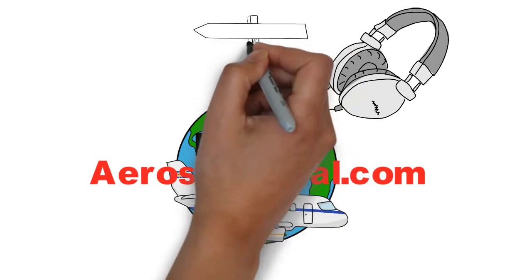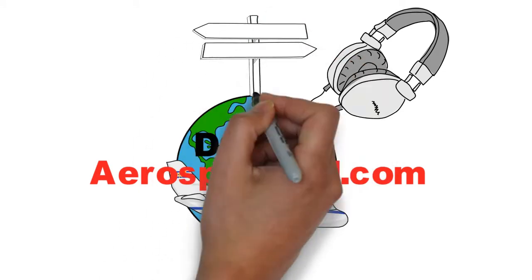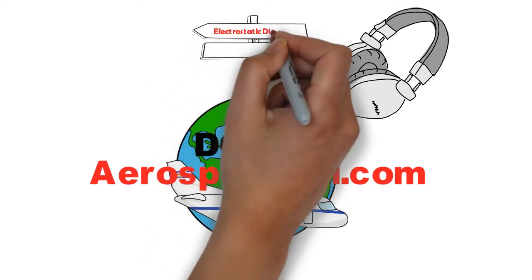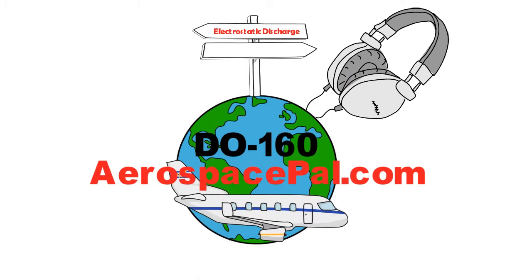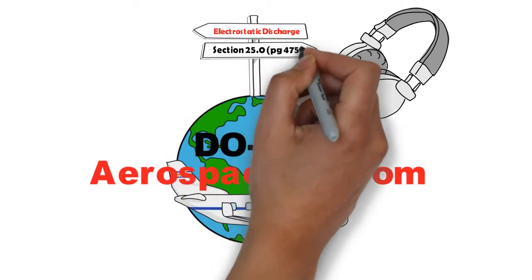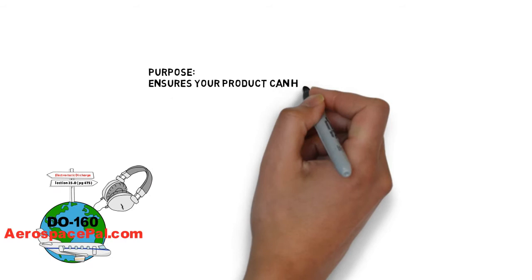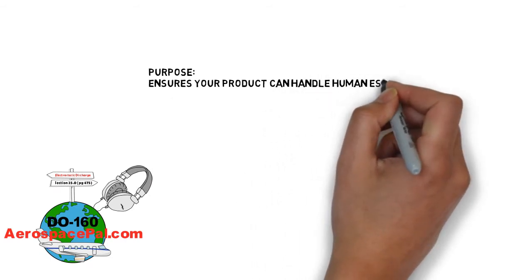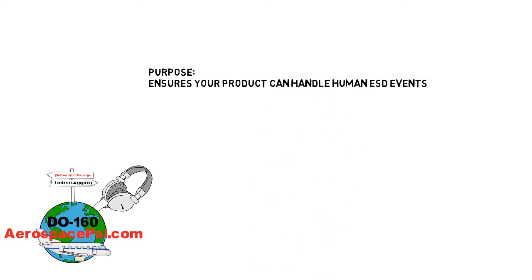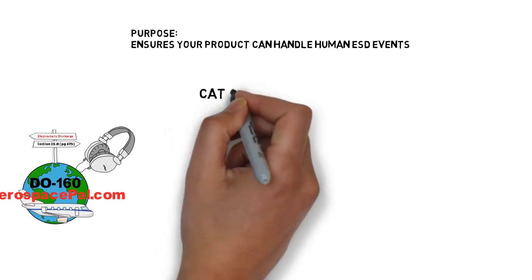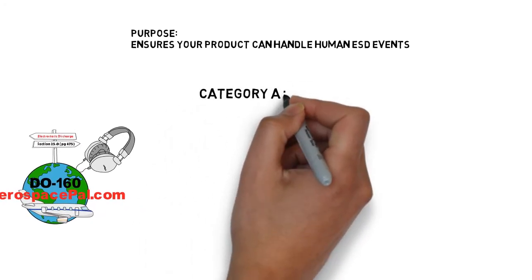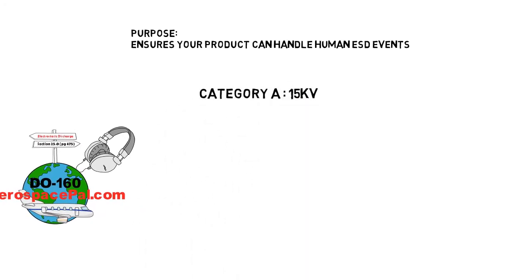What's up man, we're here talking about ESD — electrostatic discharge. This is section 25 of DO-160. This simple test ensures that your product can handle ESD events from human contact up to 15,000 volts. There's only one category for this test: it's CAT A. CAT A tests your product to a 15,000 volt ESD event.